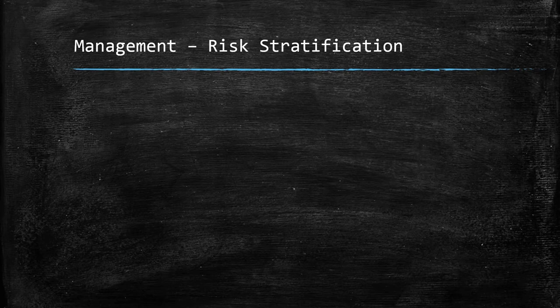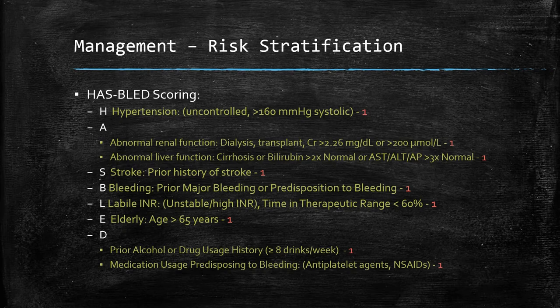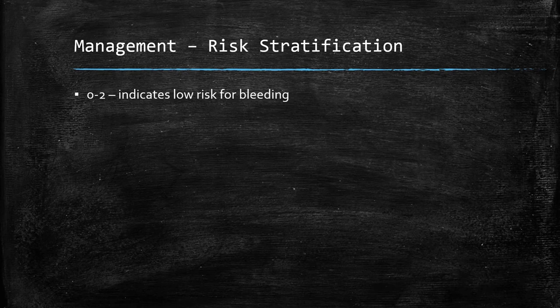If a patient requires anticoagulation, we assess the bleeding risk using HAS-BLED. H is for hypertension, scoring one point. It also takes into account abnormal liver and kidney function, one point each. Stroke scores one point, and incidence of major bleeding or predisposition such as haemophilia also gives points. L is for unstable or fluctuating INR. E is for elderly, those above 65 years. D is for drug or alcohol use, equal to or greater than eight drinks a week, and medications predisposing to bleeding such as antiplatelet agents and NSAIDs also score a point. A score of 0–2 indicates low risk for bleeding; 3 or greater indicates high risk.